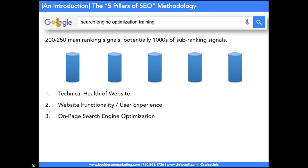Pillar number three: on-page search engine optimization. It starts with keyword research, then how you're going to optimize each and every page's meta tags, and how things are hyperlinked on your web pages. That's called on-page SEO — basically anything that you can physically manipulate on your website.